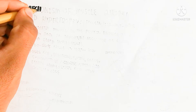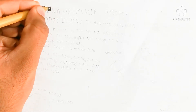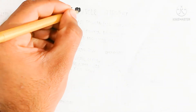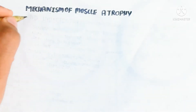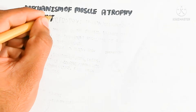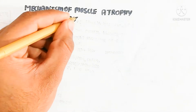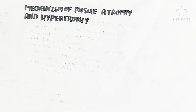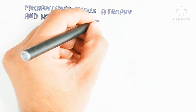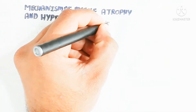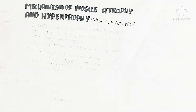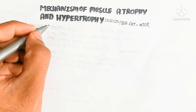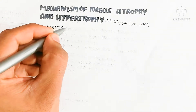Hello, in this video we will discuss the mechanism of muscle atrophy and hypertrophy. Atrophy means the loss of muscle, and hypertrophy means the development and growth of muscle. In this video we will discuss insulin interaction, insulin-like growth factor, and the AKT and mTOR molecular pathway. First of all, we need to understand the introduction.